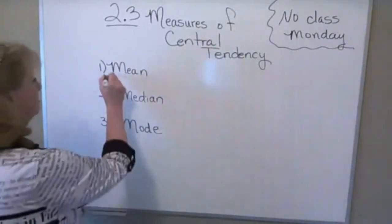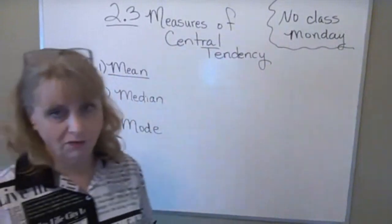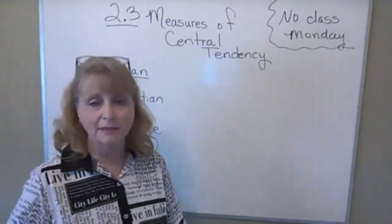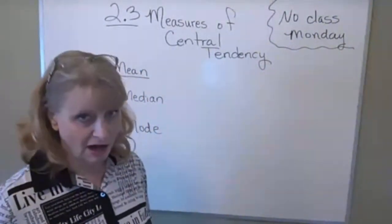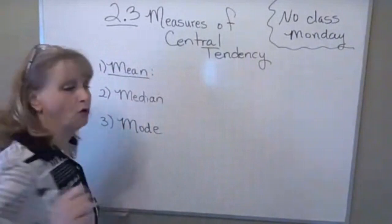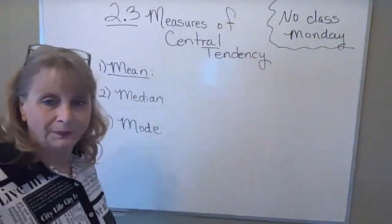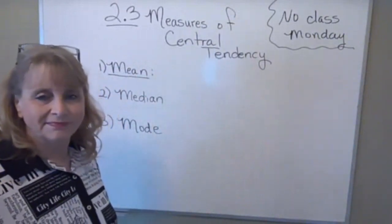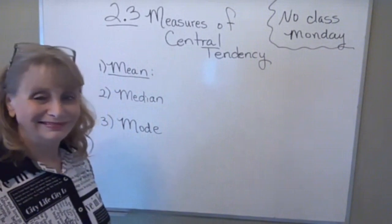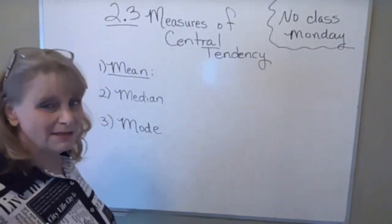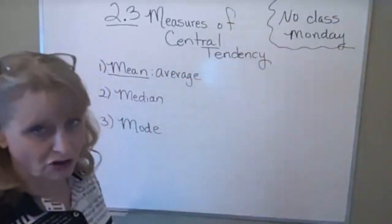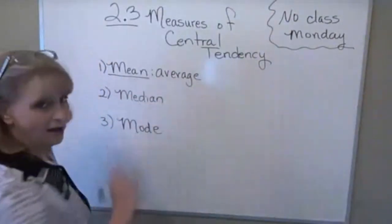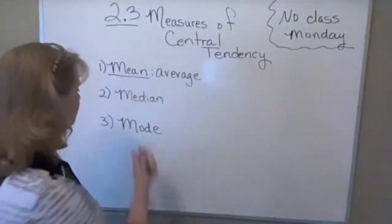Let's first talk about mean. Mean is another word for something — we don't usually call it the mean when we find it. We find the mean of our grades all the time. Mean is just another word for average. We've all averaged our grades, so the mean of a data set is just the average of the numbers.